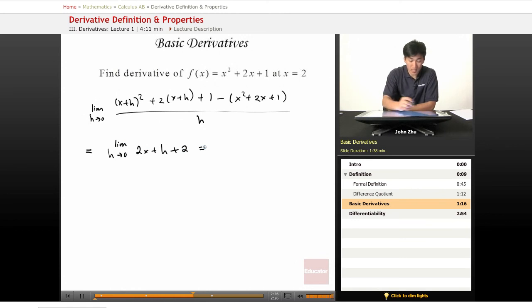And if we plug in 0 for h, we would just get 2x plus 2. And at x equals 2, the function becomes 6.